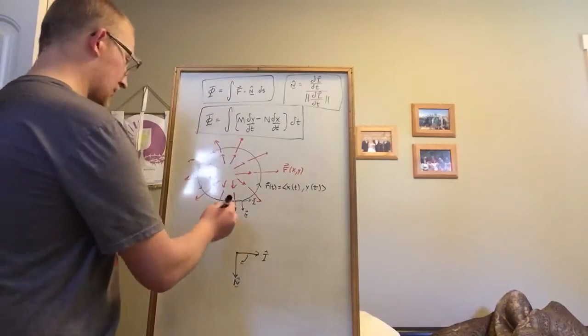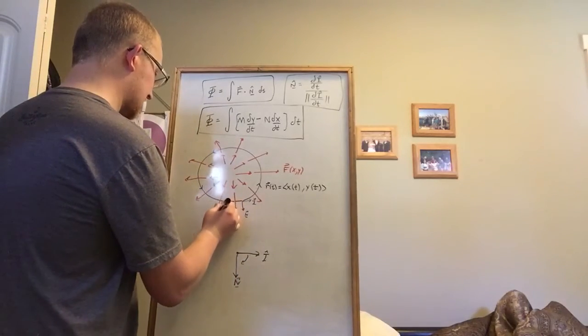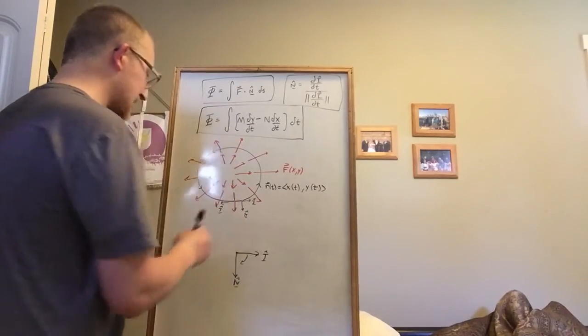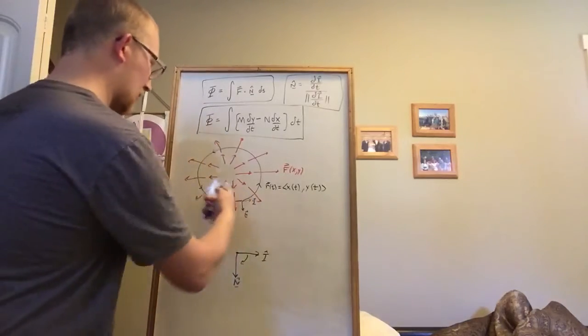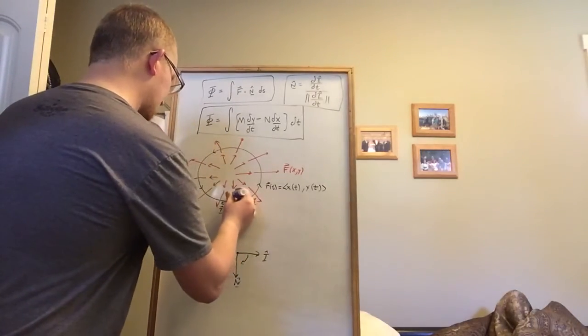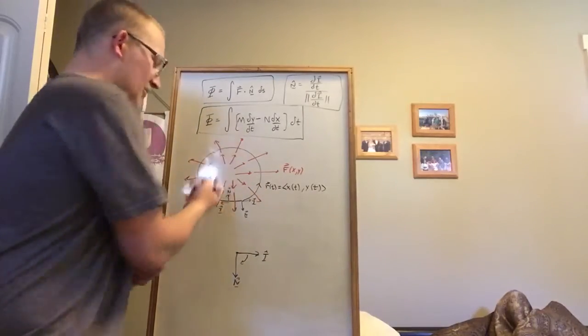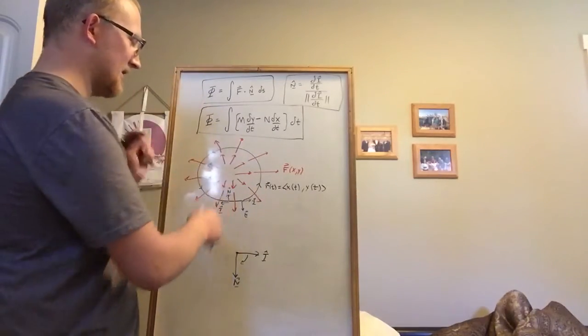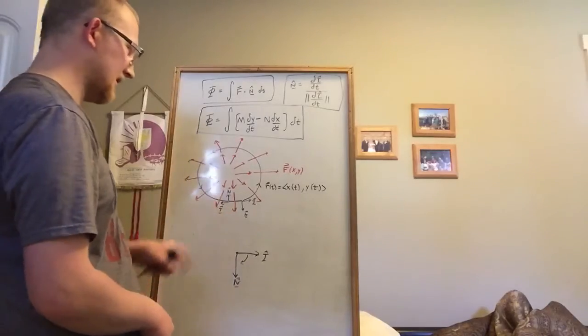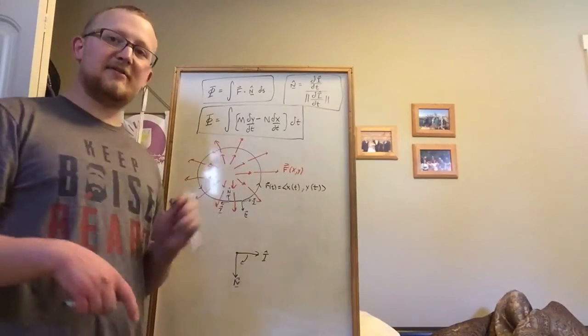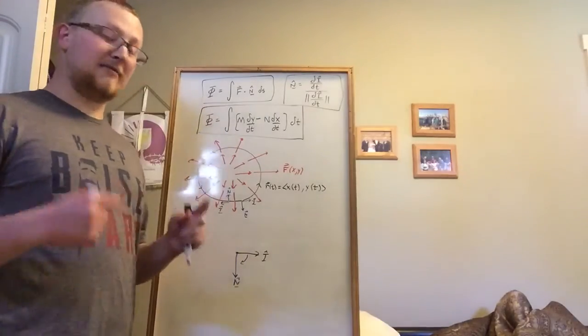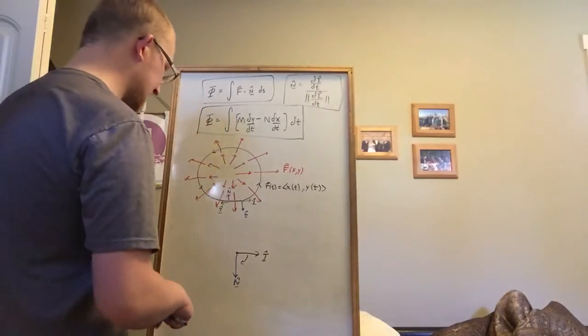However, if we're going the opposite direction and the unit tangent vector is that direction, and we go clockwise, well now we've got a problem. Because our normal vector is pointing into the shape, thus at 180 degree angle to the field, that's going to give us negative flux. And by convention, this needs to be positive flux.